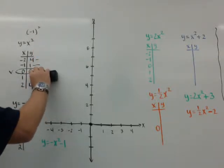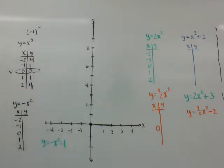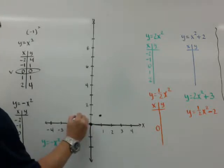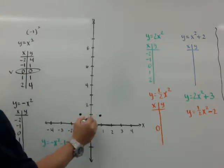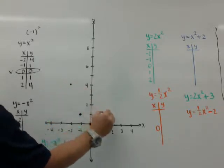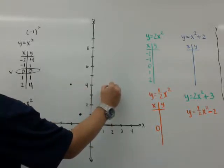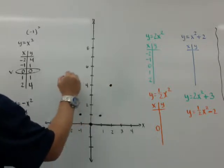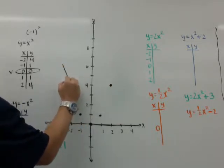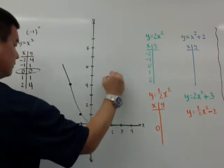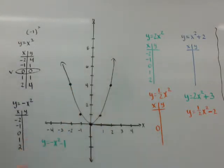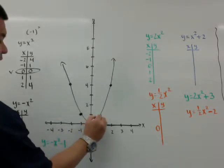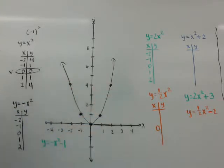When you graph it, you get what I call the simple parabola: 0,0 — 1,1 — negative 1,1 — 2,4 — and negative 2,4. When you graph it, don't make a v — make sure you curve it. So five dots: one on the vertex, one on each side. And if you miss a dot, that's okay — just try and make it as best as you can.